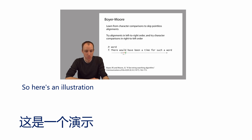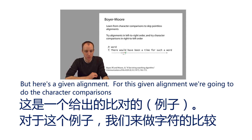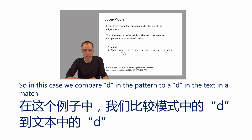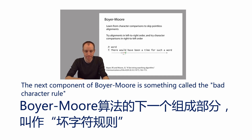Here's an illustration. We'll try alignments in left-to-right order, but for a given alignment, we're going to do the character comparisons starting from the right-hand side. In this case, we compare a D in the pattern to a D in the text and they match, and then we go to the left and try an R in the pattern and it mismatches an L in the text.